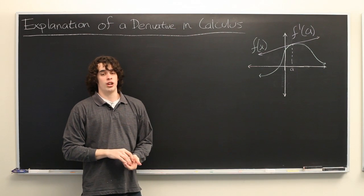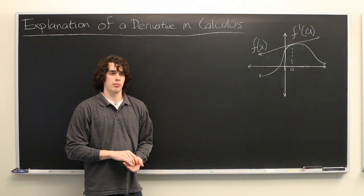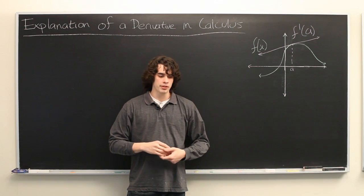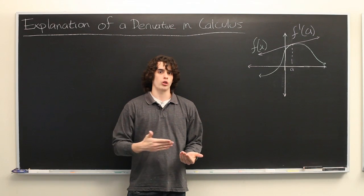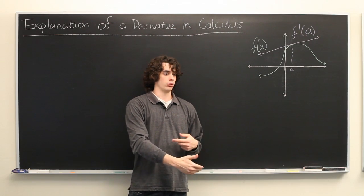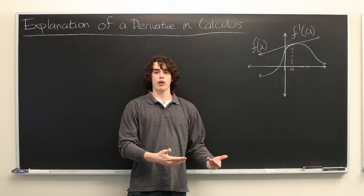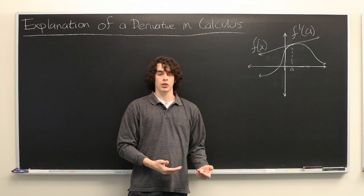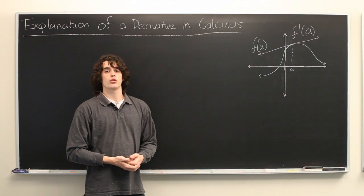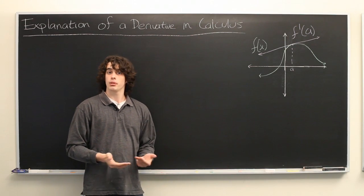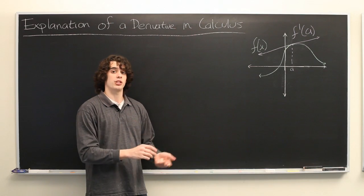Now, the instantaneous rate of change is a bit of a mouthful and may seem like an abstract concept. But if you consider a car driving along a highway and you're looking at the position of the car as a function of time, you could think of the instantaneous rate of change of position as simply the velocity or the reading on the speedometer.